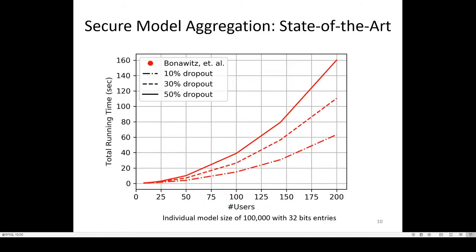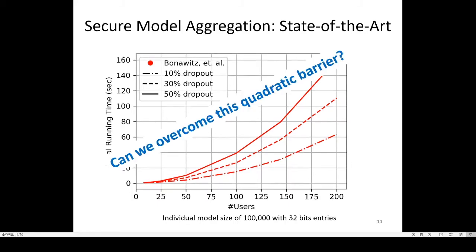Here is an experiment we have done to demonstrate the performance of the state-of-the-art. The x-axis corresponds to the number of participating users, and the y-axis corresponds to the total learning time. There are two key observations. First, total learning time is quadratic in the number of users. Second, the total learning time substantially increases as the dropout rate increases. This is because the server must reconstruct pairwise random masks of dropped users, and the number of pairwise random masks is N-squared. This quadratic aggregation overhead is a main bottleneck to scale secure federated learning to a large number of users. So the main question we want to answer is: can we overcome this quadratic barrier?